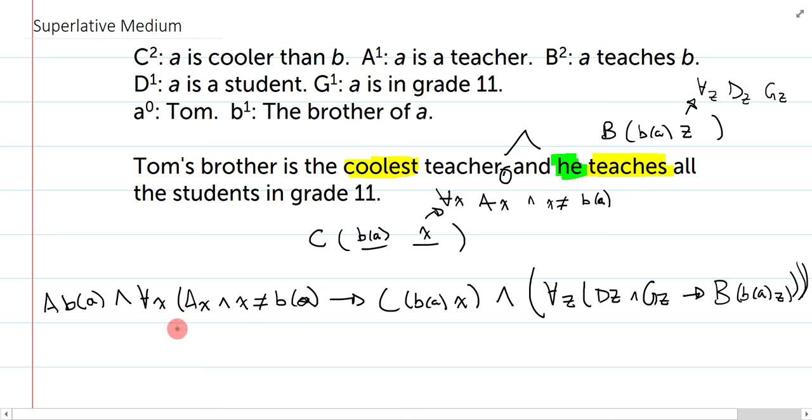And I can just throw that in at the front, and now I've completed my superlative. Okay. So, my superlative had three parts. First, I had to actually say that Tom's brother is a teacher. Then I had to say that x is all other teachers. And then I could say Tom's brother is cooler than all other teachers. That is the superlative part. Now, on this side, I say the property. And Tom's brother teaches all the students in grade 11. Again, I typically work from inside out using the predicates.